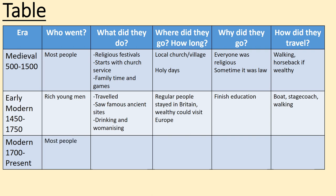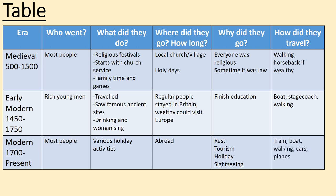Lastly, the modern era. Who goes on holidays? A lot of people do, whether domestically within the UK or abroad. What do people do? Various holiday activities — city breaks are quite popular, all-inclusive resorts, different types of holidays. Where do you go? Some people go abroad. How long? A few days for a city break, or maybe a week away with family. Why do you go? For rest, tourism, sightseeing, or a general holiday. How do people travel today? You could take a train, a boat, walk, drive a car, or go by plane.